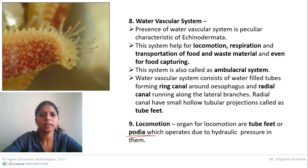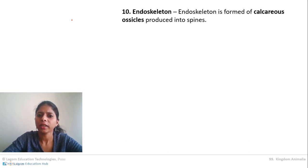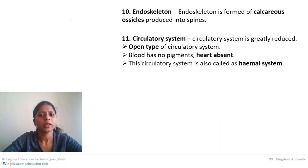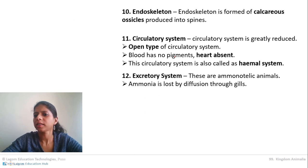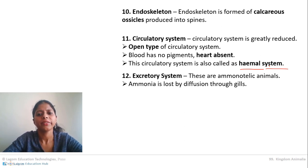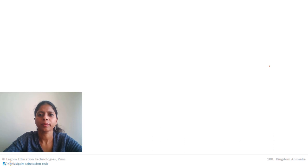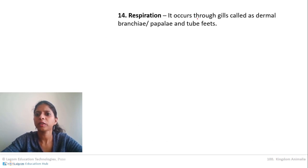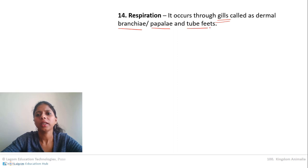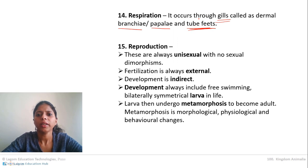The tube foot comes out and on the downside has an ampulla — the ampulla does not come out, but the other parts extend and help in locomotion. Exoskeleton is made of calcareous ossicles. The circulatory system is open-type with no heart; this special circulatory system is called the haemal system. These are ammonotelic animals that excrete ammonia as a waste product, and ammonia diffuses through gills. The nervous system has two rings. Respiration takes place through papillae or even through the tube feet.